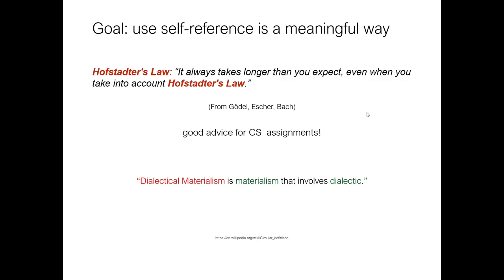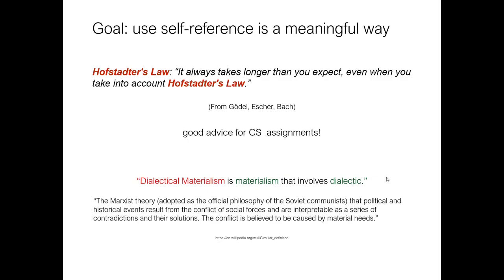But self-reference is not always used in a meaningful way. From Wikipedia's definition of circular definition: dialectical materialism is materialism that involves dialectic. I still don't know what this means. They're using the terms to define in the definition — that's meaningless. Mountains and hills are another example of circular reference that's not particularly useful. A mountain is a landmass higher than a hill; a hill is a natural elevation lower than a mountain. For a computer we're in trouble — it would go look up mountain, mountain refers to hill, hill refers to mountain, and we go around and around until the battery dies.